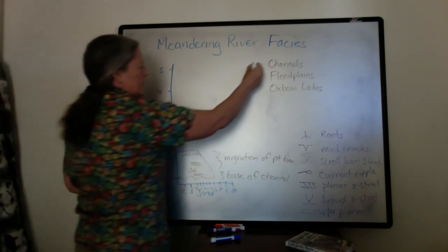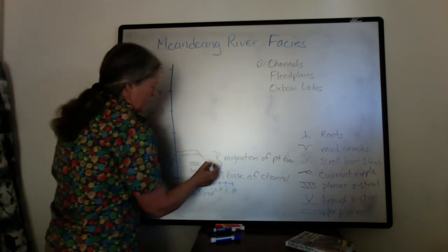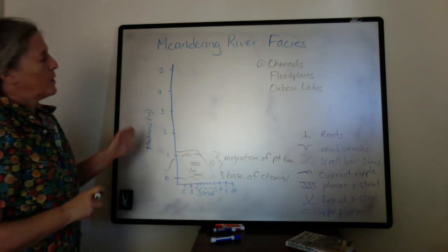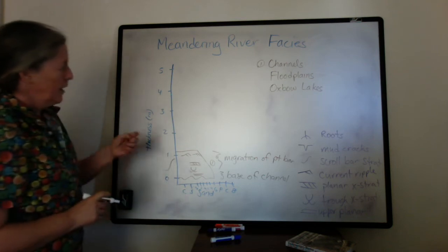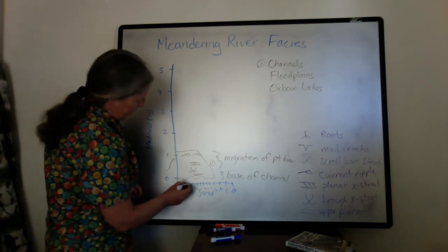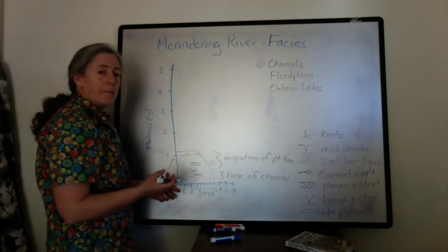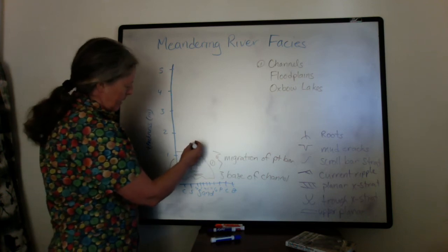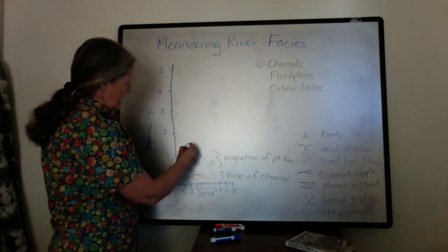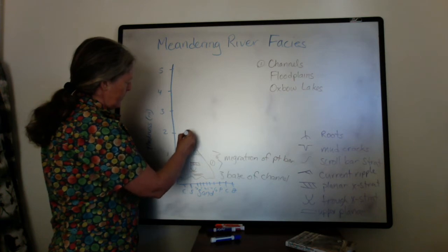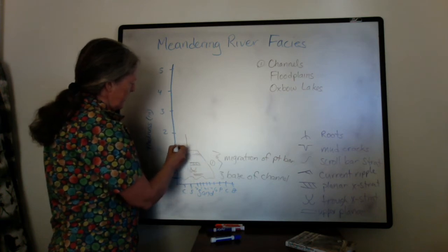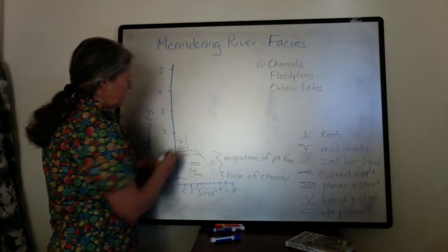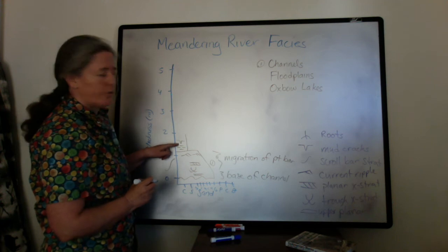This represents a channel deposit. Once the channel migrates away, we can get the floodplain. Most of the time there's very little sedimentation except for maybe some accumulation of dust from the air and occasional flood deposits, so we end up mostly with mud. But sometimes it's dry, sometimes it's wet, and when it dries out it can form mud cracks.